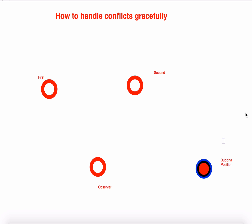So without much delay, let's see what the exercise is. For this exercise, you need three or four chairs. Three is mandatory and the fourth one is optional. Put the first three chairs in a triangular position — first, second, and third. The fourth one, if you have a chair, you can put it a little bit far away from all three chairs, or you can just use a space where you can stand far away from the three chairs and look at them.